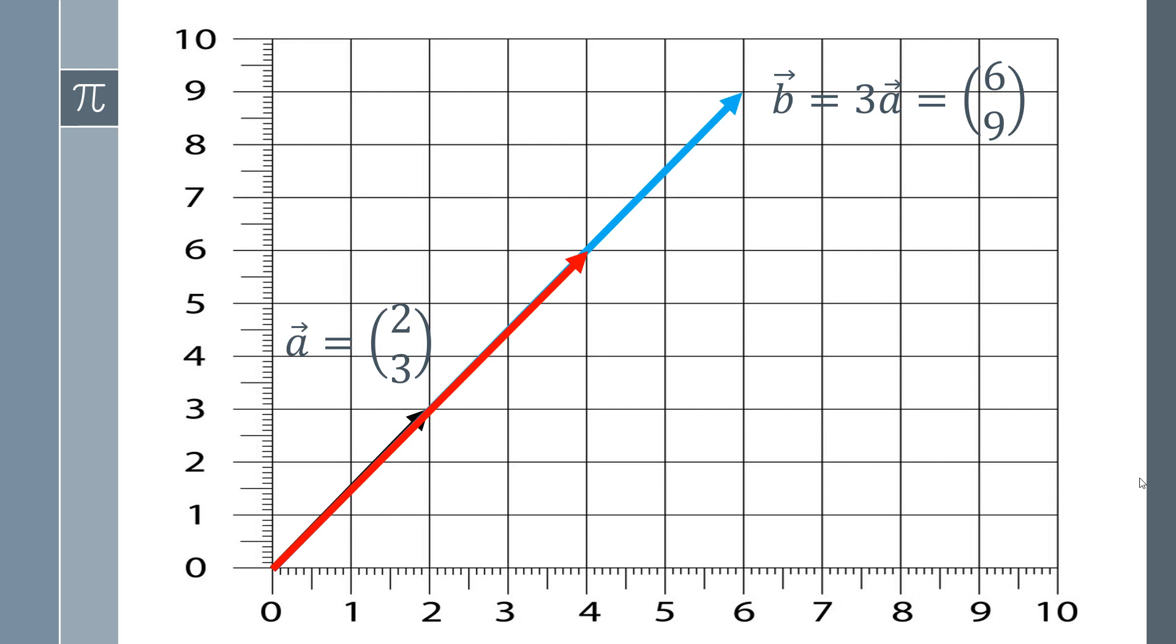So what we can say as a rule is that if we can say that vector A is some number K, and K must be a number, it cannot be a vector. It can be any number, positive, negative, pi, fraction, thirds, anything, as long as it is one value, and we multiply that by vector B, then they are parallel.